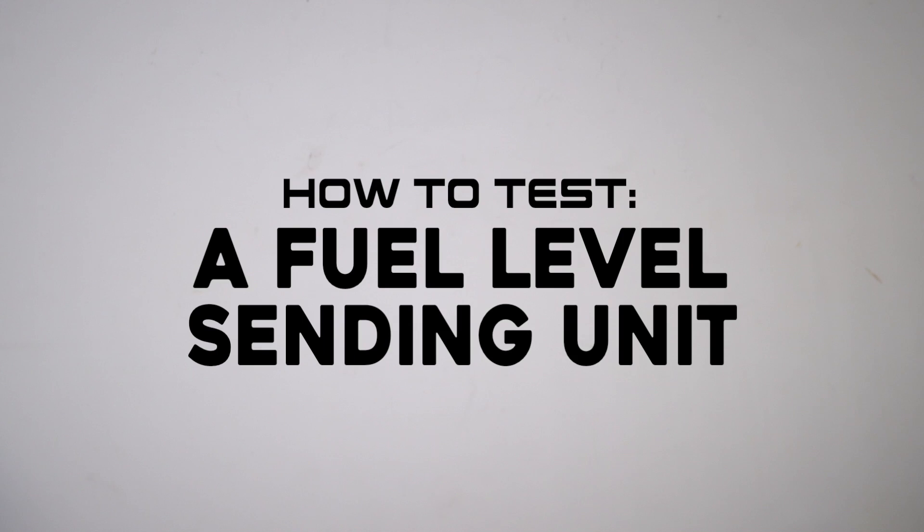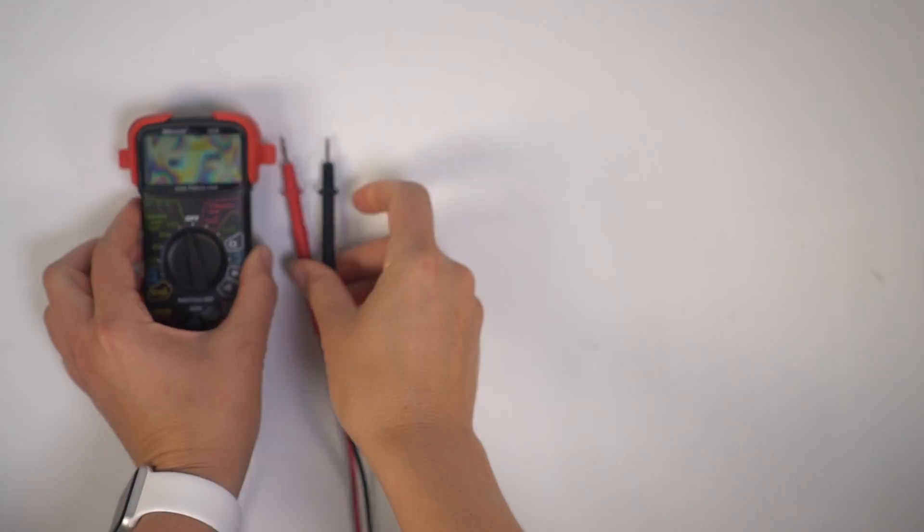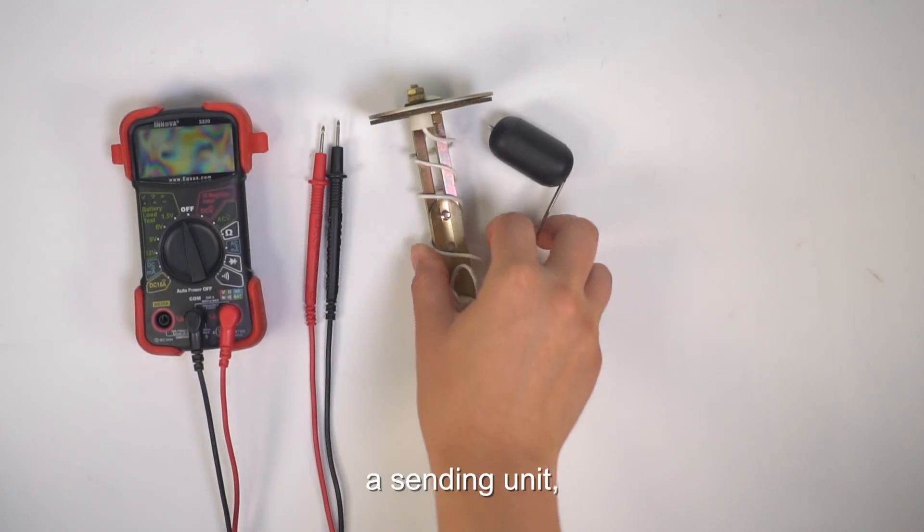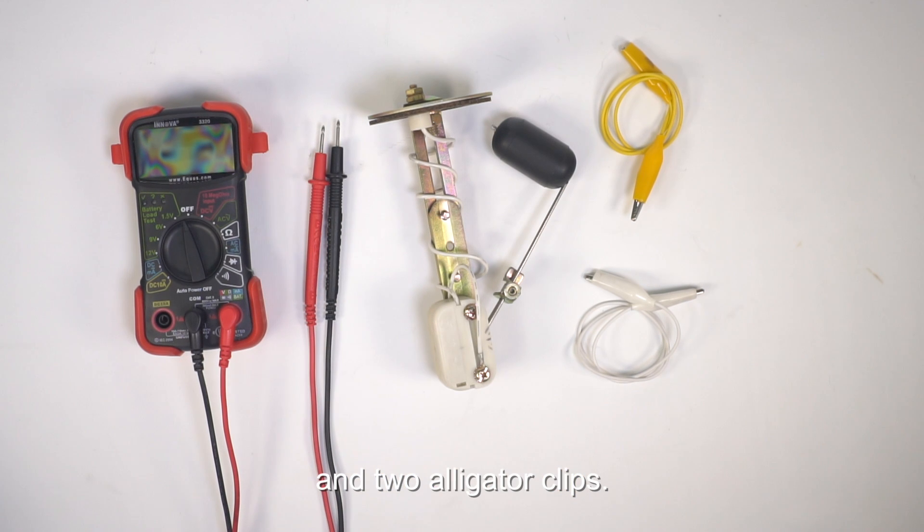How to Test a Fuel Level Sending Unit. What you'll need? A voltmeter, a sending unit, and two alligator clips.